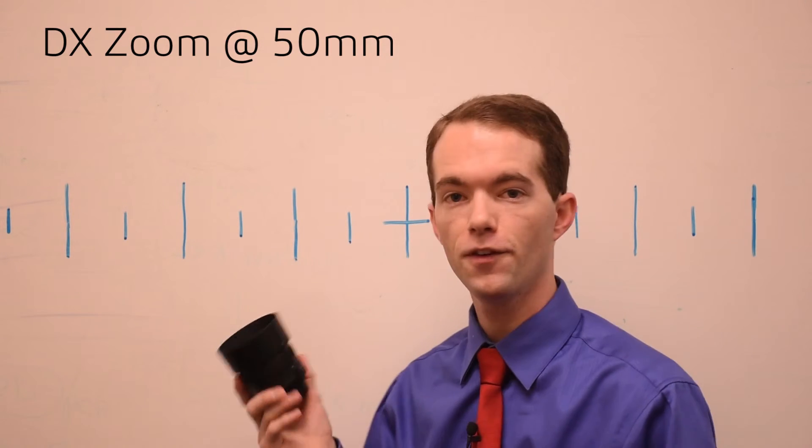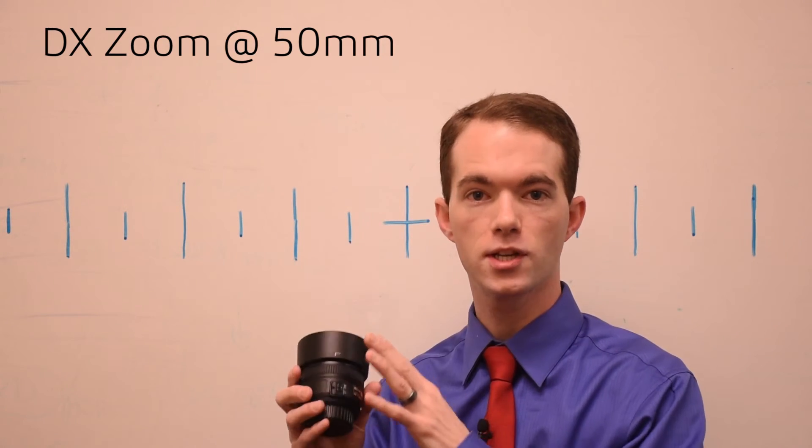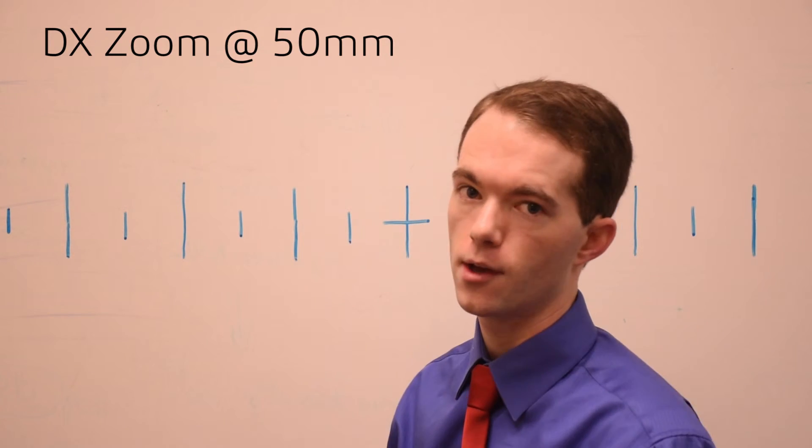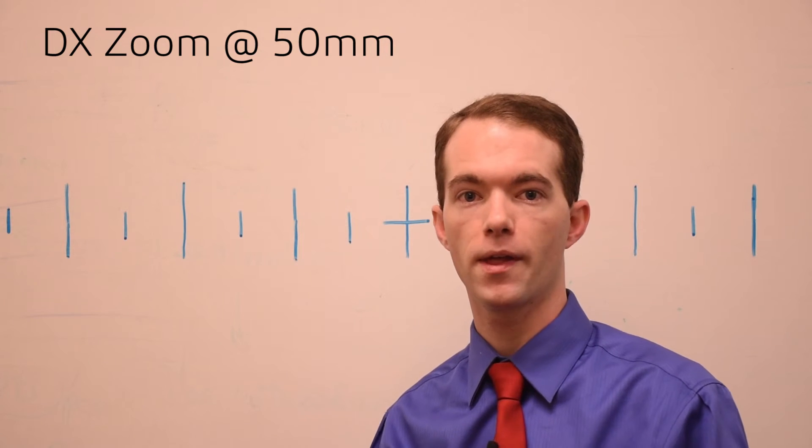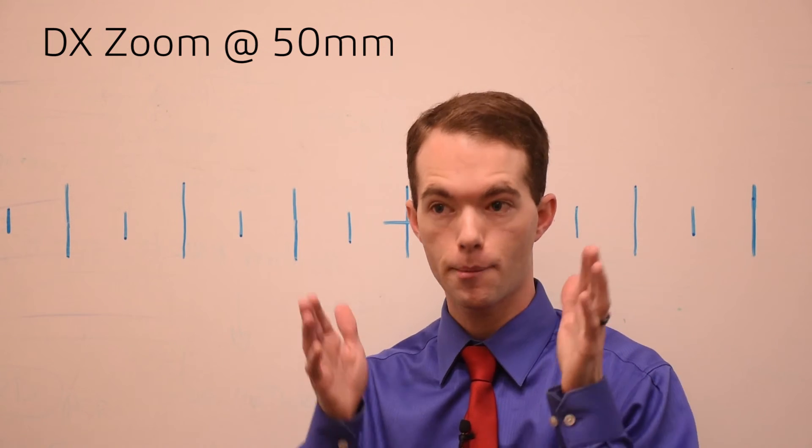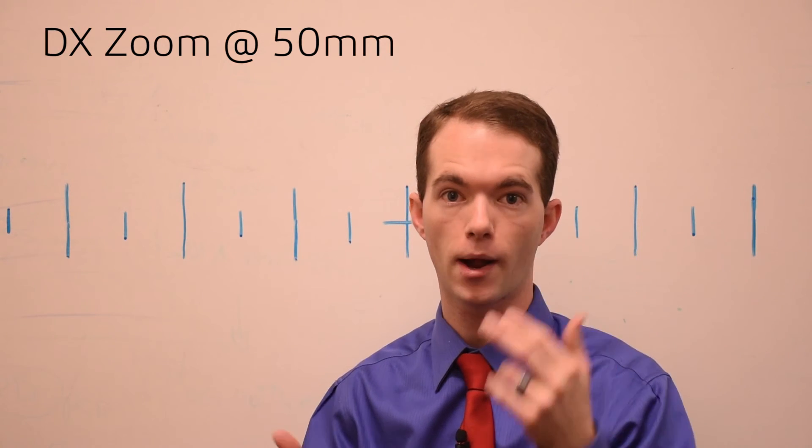Normally when you take a 50mm lens on a full frame camera you're going to get what is considered a normal field of view. Well I find this interesting because of my crop sensor camera over there with the DX lens and I dial it to 50mm I'm getting what looks like a normal view when I compare it through the lens and then through my eye.